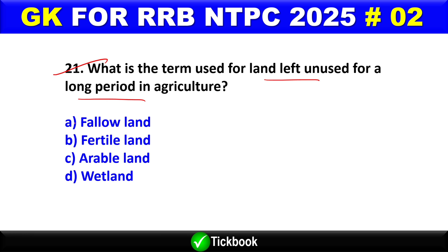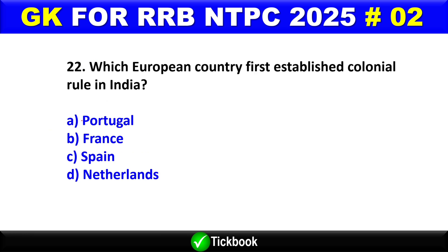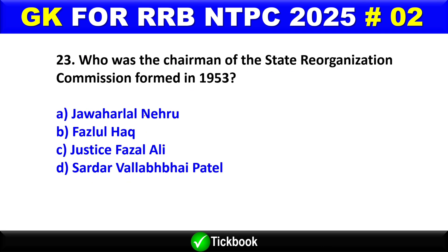Question number 22: Which European country first established colonial rule in India? Option A is the right answer — Portugal.